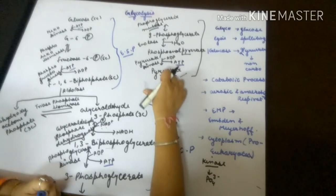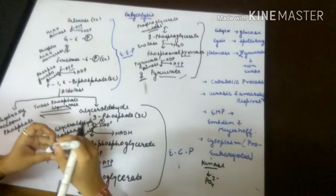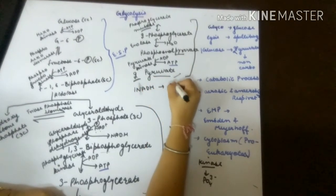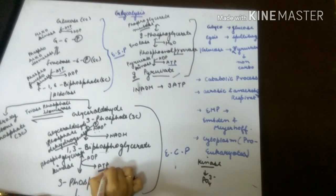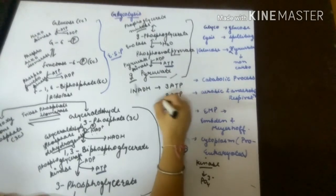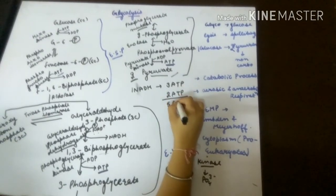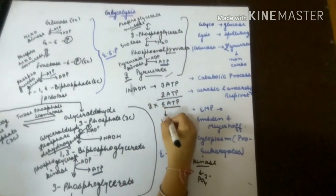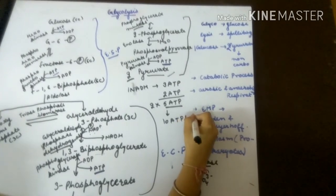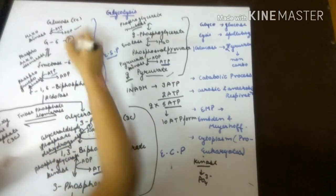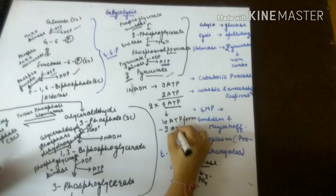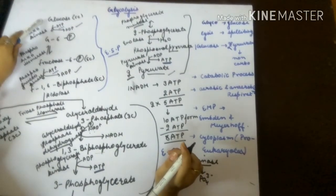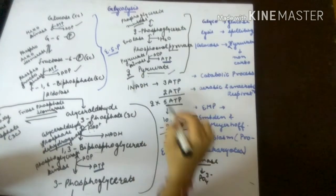Two pyruvate molecules are formed. One NADH generates three ATP molecules. Two ATP molecules are produced per turn, giving a total of five ATP molecules per cycle. Since this pathway goes through two times, there is a total of ten ATP molecules formed. But there is a utilization of two ATP molecules, so a total of eight net ATP molecules are produced. This means one glucose molecule forms two pyruvate molecules with a release of eight ATP energy.